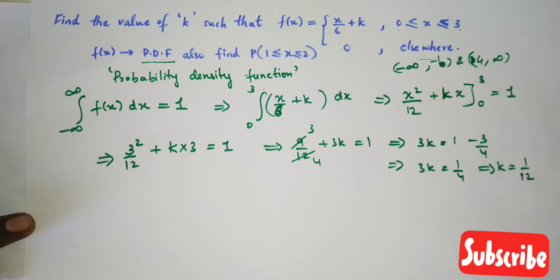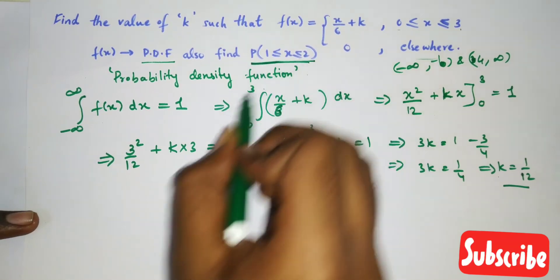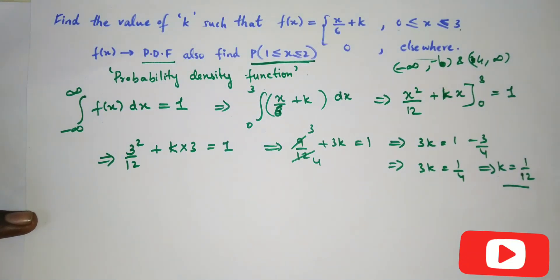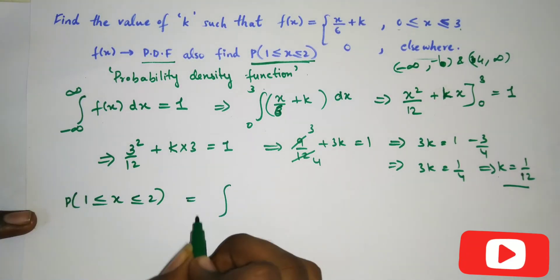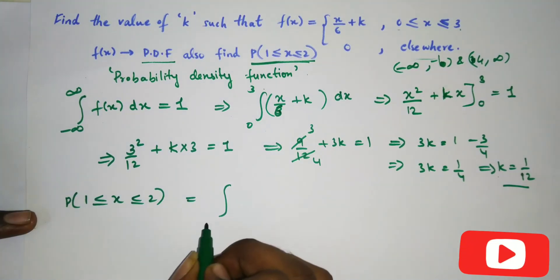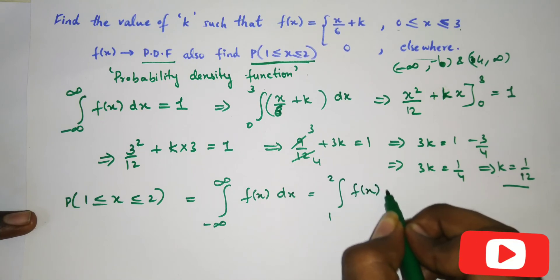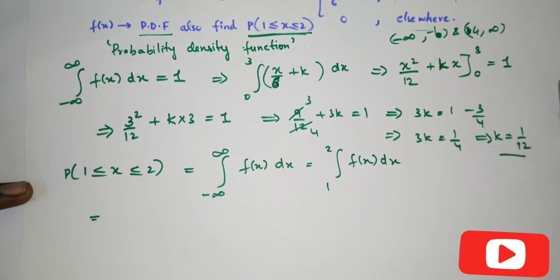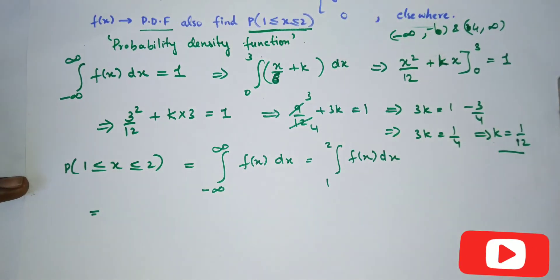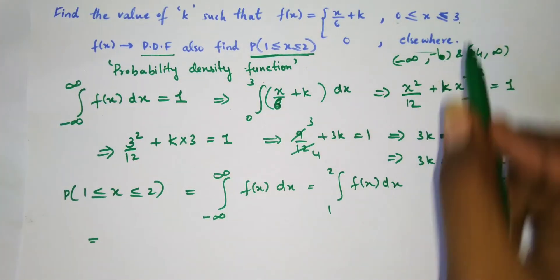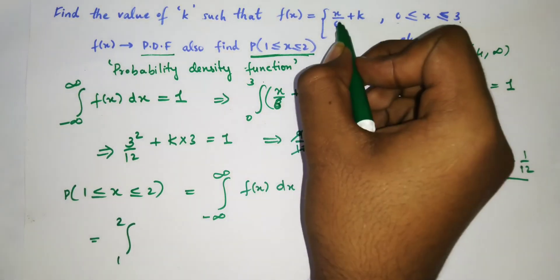Now we need to find one more thing: the probability P(1 ≤ x ≤ 2). Since it is an interval, the probability equals the integral from 1 to 2 of f(x) dx. The interval 1 to 2 lies within 0 to 3, so f(x) in this range is x/6 + k.